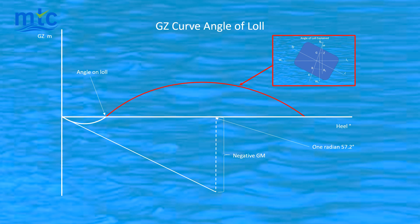If the vessel is heeled further, it will form a small righting lever and the GZ curve in red is above the horizontal axis and is therefore positive. The vessel will only return to the angle of loll.